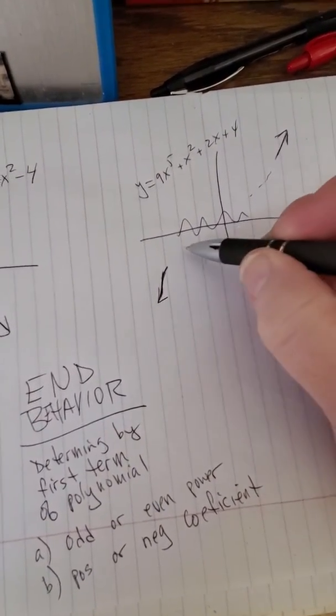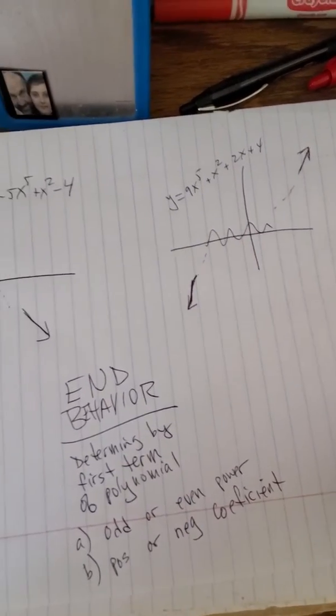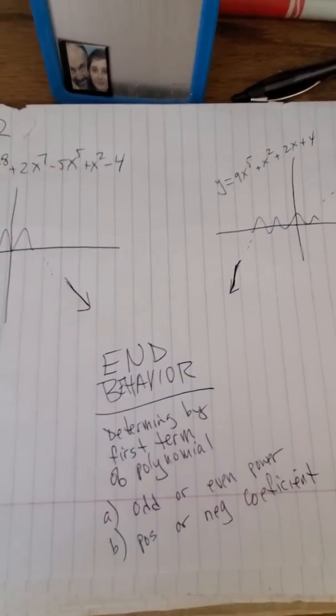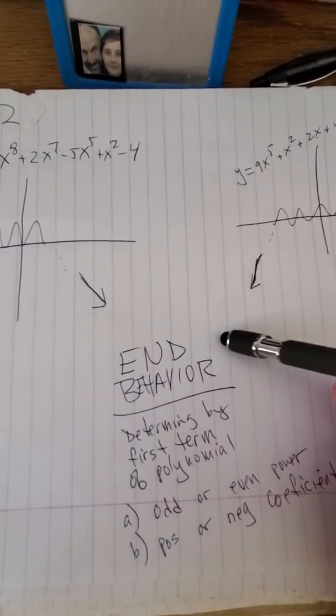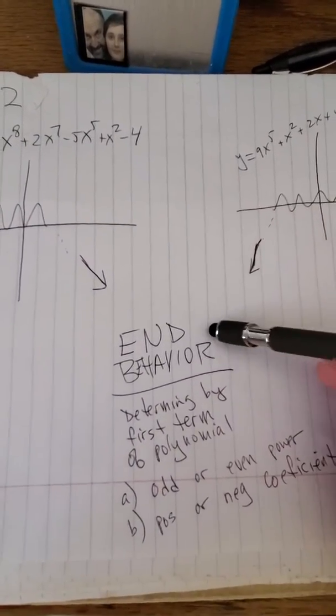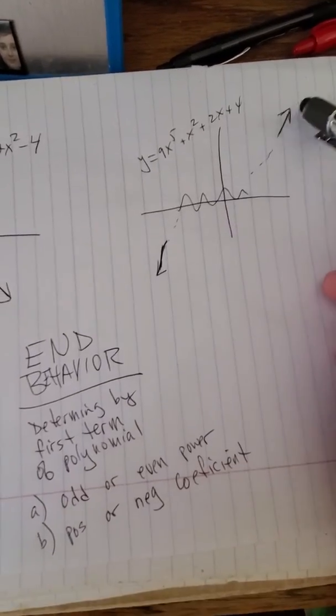But eventually, it's going to go up here and go down there. And what does it depend on? We call it the end behavior. Meaning I don't care about the wiggles and squiggles in the middle. I just want to know where it's going to wind up on the ends.